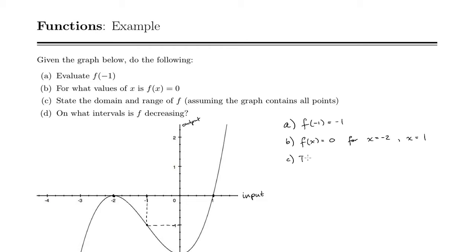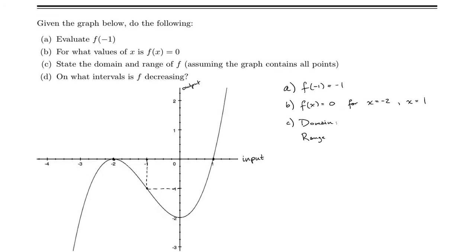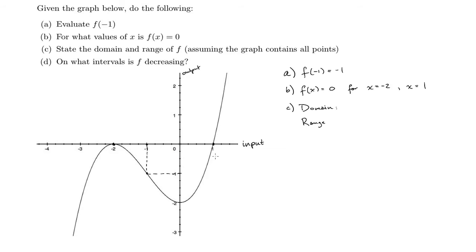So for our domain and range, we need to find all the possible inputs and all the possible outputs. So for our domain, we find the point furthest to the left and the right of the curve. So assuming we see all the points here, our furthest left point is there, and our furthest right point is there.